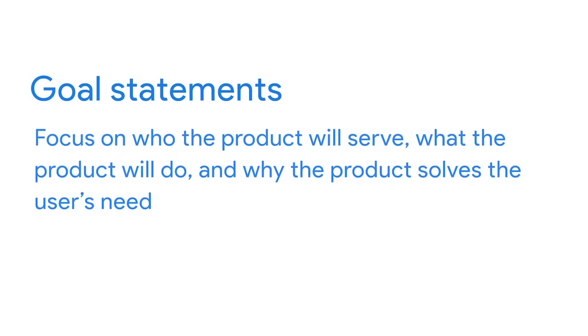At this point in the design process, we're transitioning from the problem the user is facing to the solution we can provide as UX designers. The problem is defined in the problem statement, and the solution is listed in the goal statement. Goal statements cover who the product will serve, what the product will do, and why the product solves the user's needs. To answer the who, what, and why, you should lean on the user research you've already conducted.